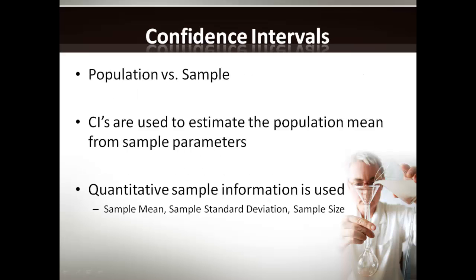Before discussing confidence intervals, we must understand the difference between a population and a sample. When we conduct a study, it would be ideal if we could study everyone in our population of interest; however, that's not usually feasible. So we take a small group that we think is representative of that population and study them — this small group is what we refer to as our sample. When we study this sample, we get results, base conclusions on that sample, and try to extrapolate these conclusions onto the population, and there are some errors associated with this.